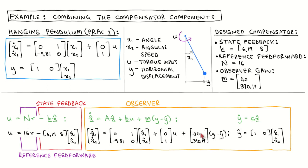The control law describes how the plant input is calculated. The first term is the reference feed forward, where the reference feed forward gain has been designed to produce the desired steady state behavior. The second term is the state feedback gain vector multiplied with the estimated states, where the state feedback gain vector has been designed to produce the desired transient behavior.